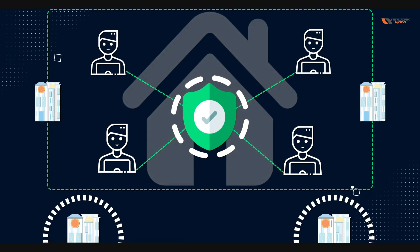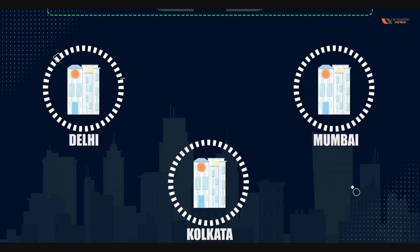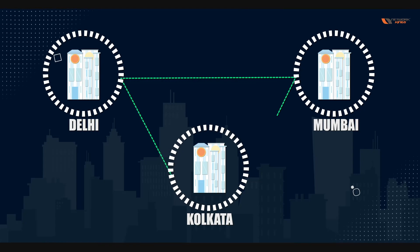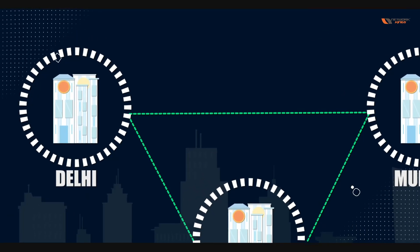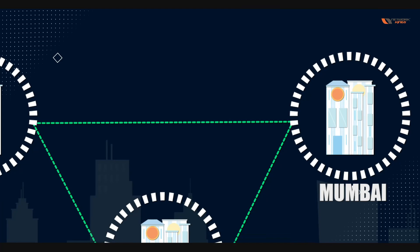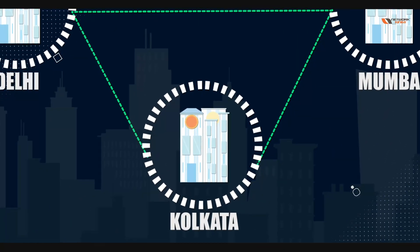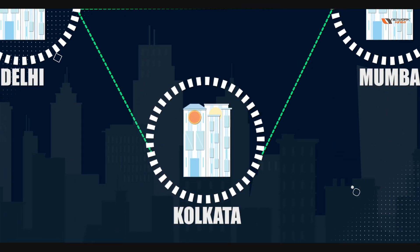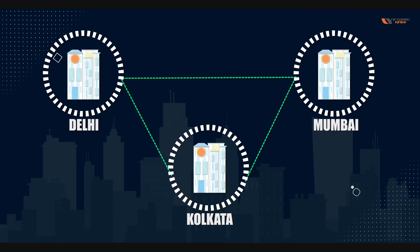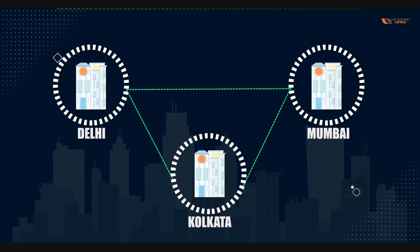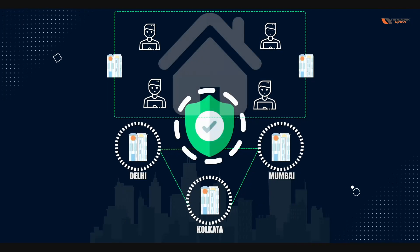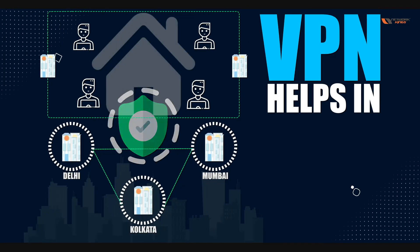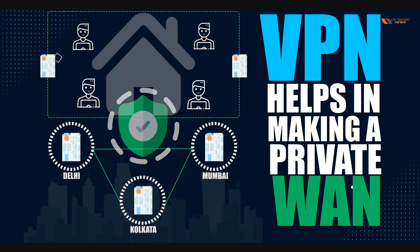When you want to connect to a Delhi branch, your Mumbai branch, or maybe your Kolkata branch over the internet — Delhi and Mumbai, Delhi and Kolkata, Mumbai and Kolkata — this is called VPN. VPN is a virtual circuit which helps us to make our private WAN.